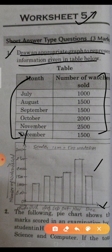So we draw the bar graph. This is x-axis and this is y-axis. We write the different months: July, August, September, October, November, and December. These are the number of watches sold: 500, 1000, 1500, 2000, 2500, and 3000.